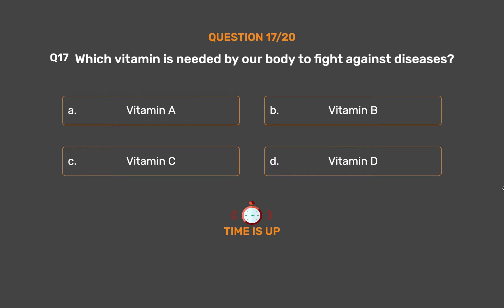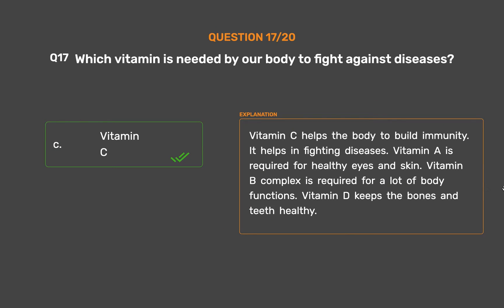The correct answer is Option C - Vitamin C. Vitamin C helps the body to build immunity and helps in fighting diseases. Vitamin A is required for healthy eyes and skin. Vitamin B complex is required for a lot of body functions. Vitamin D keeps the bones and teeth healthy.